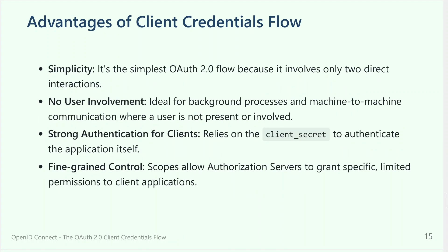Advantages of the client credentials flow: it's simple — it doesn't get more simple than this. There is no user involvement, for better or worse depending on how well you keep the client secret protected. Strong authentication for clients relies on the client secret to authenticate the application itself. And finally, granular control: scopes allow the authorization service to grant specific, limited permissions to client applications. This is great because you have a central place for authorization — you can say this machine can only access these APIs with these restrictions, even without human intervention.